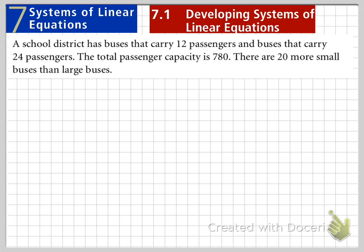What we're going to do is develop a system of equations because it's going to take two equations to solve for two unknowns. Our two unknowns are the number of small buses and the number of large buses.